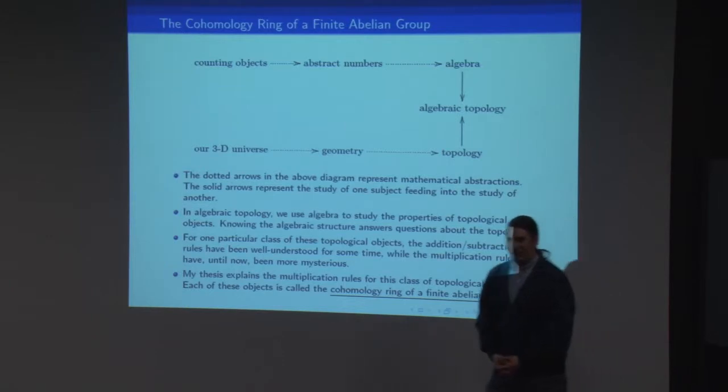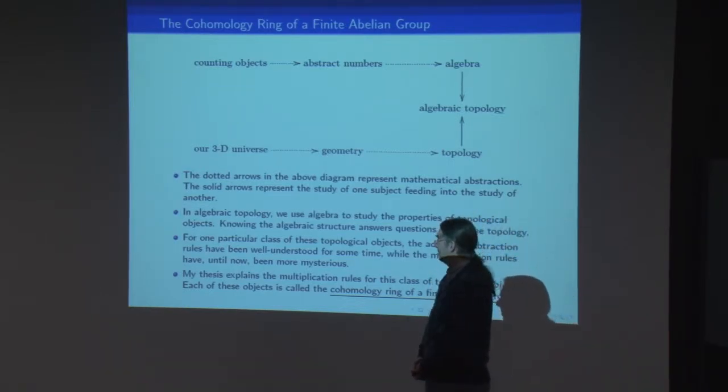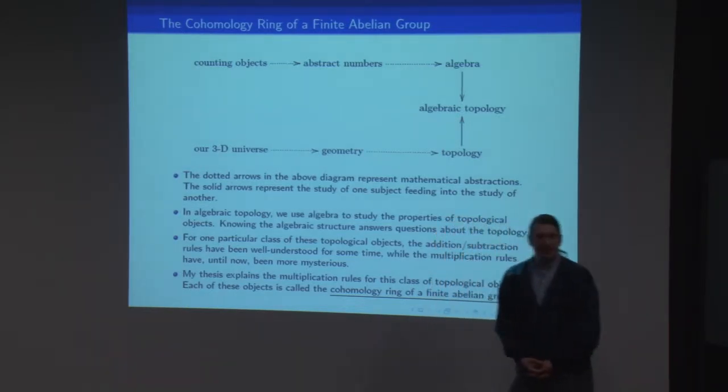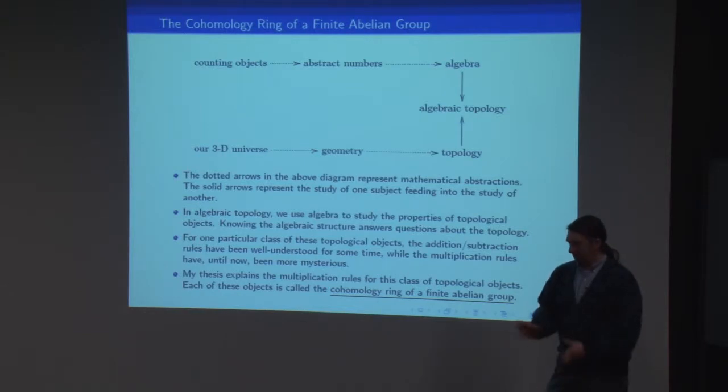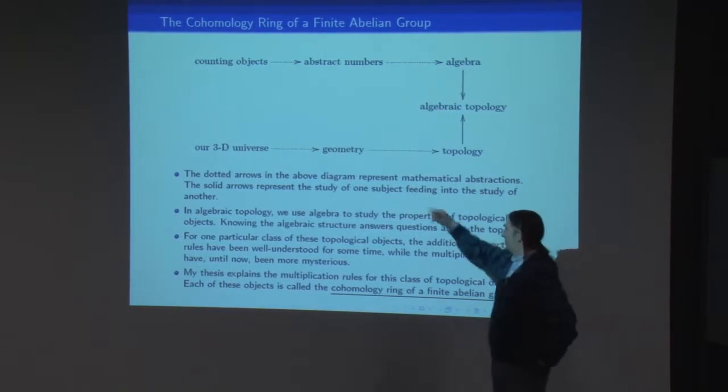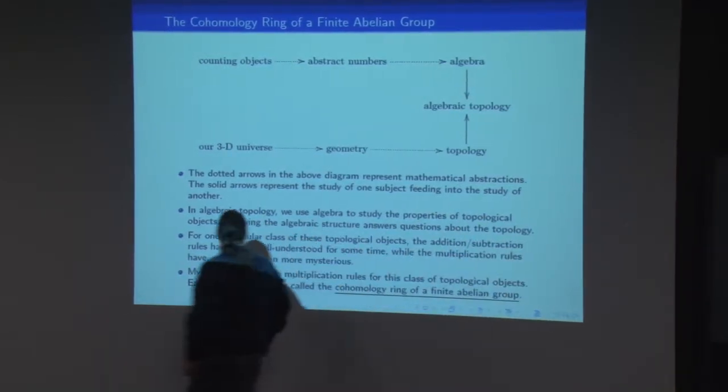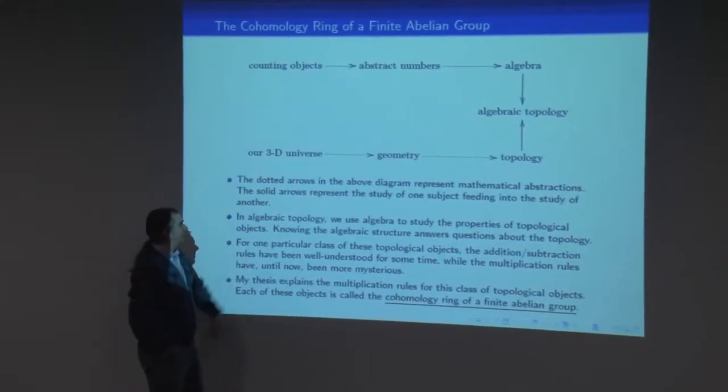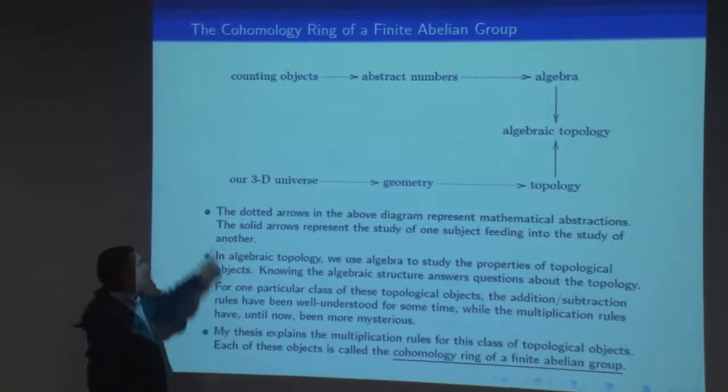As mathematicians we're obviously all in the business of abstracting things. We want to boil down the objects that we're looking at to their essential mathematical properties and then we can work with them. We'll start from the most concrete things on the left side of my top picture here and we abstract as we go over to the right.